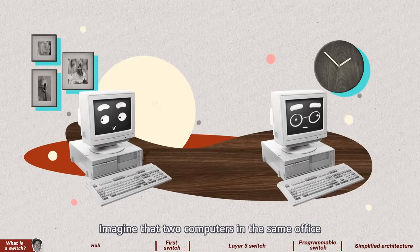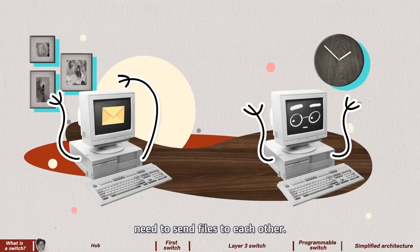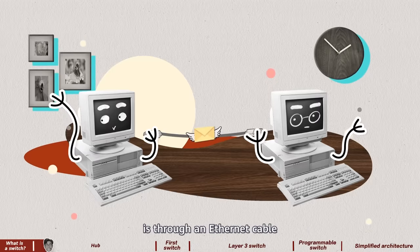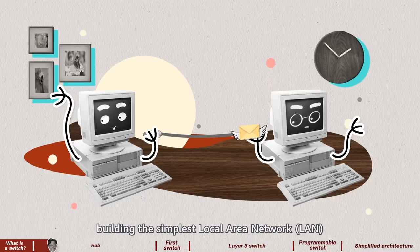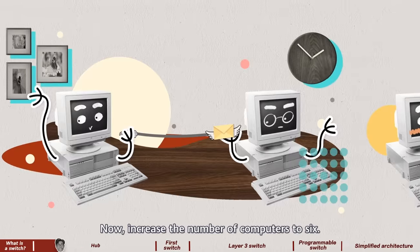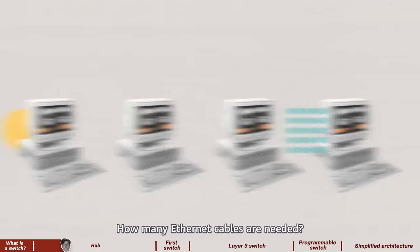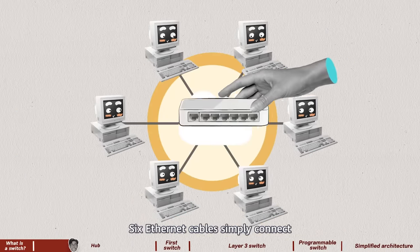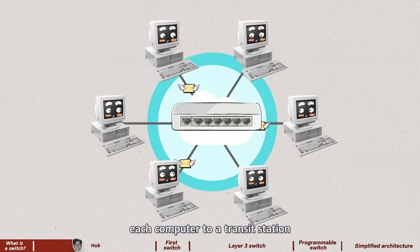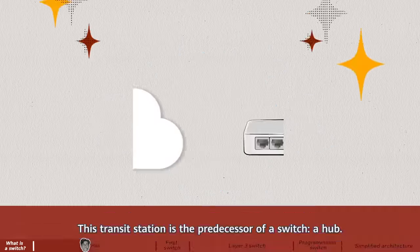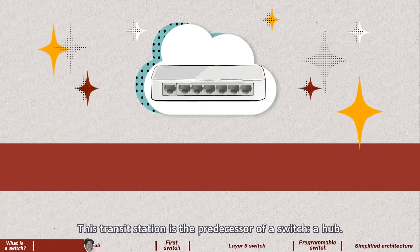Imagine that two computers in the same office need to send files to each other. The most effective way to connect them is through an ethernet cable, building the simplest local area network for the computers to communicate over. Now increase the number of computers to six — how many ethernet cables are needed? Six ethernet cables simply connect each computer to a transit station which forwards information between them.